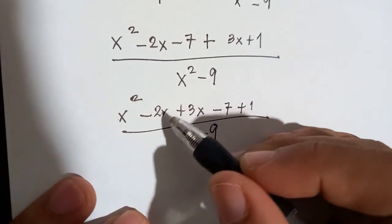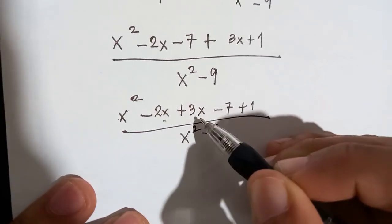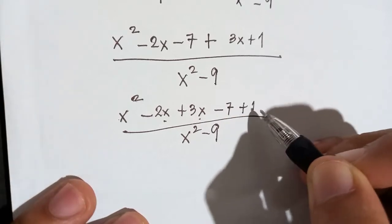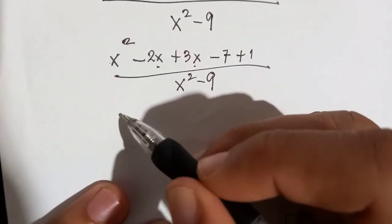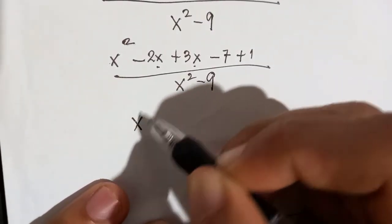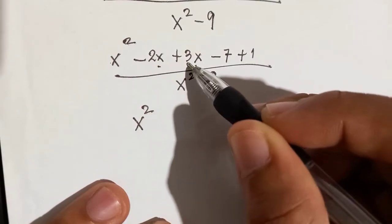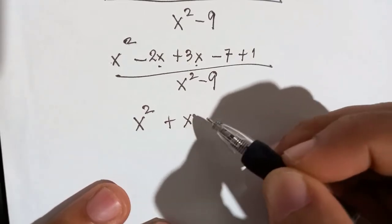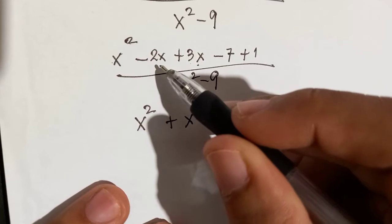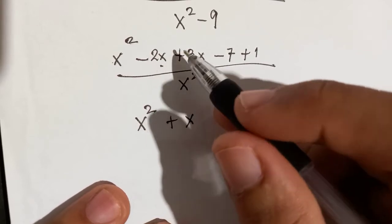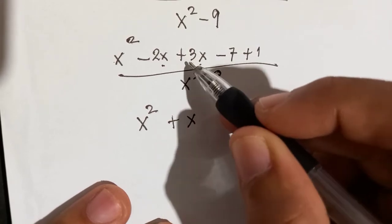In combining like terms, only combine those with the same terms — combine all those with x together, and combine all numbers only. So simplify: negative 2x plus 3x will give you positive x. Remember: different sign or unlike sign, subtract, and copy the sign of the greater absolute value. Since 3 is bigger than 2, copy the sign of 3, so positive.